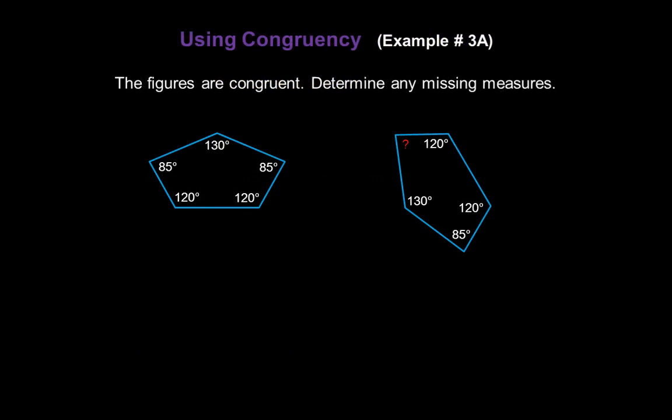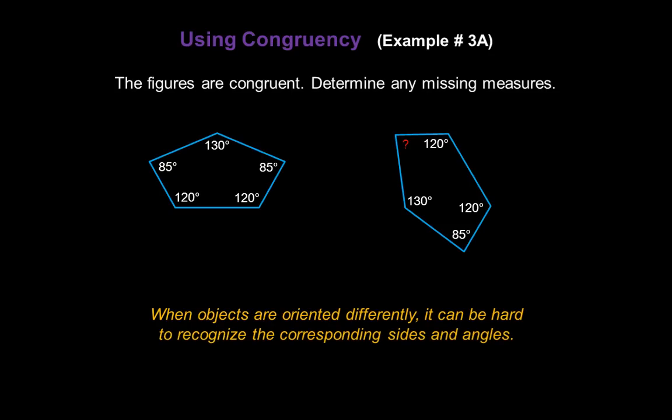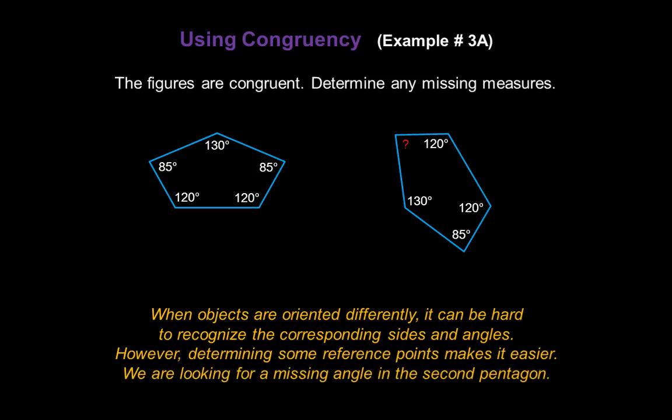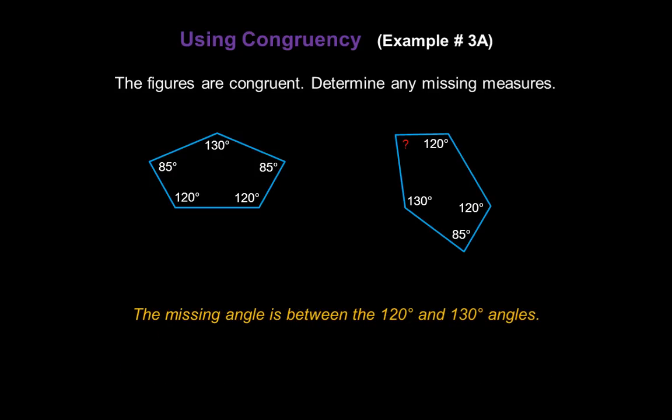Now, let's figure out, using congruency, the missing measures in these two figures. The problem tells us the figures are congruent. So when objects are oriented differently, it can be hard to sometimes recognize the corresponding sides and angles. However, determining some reference points will make it much easier. We're looking for a missing angle in the second pentagon, and it's that red question mark. The missing angle is between 120 degrees and the 130 degree angles.